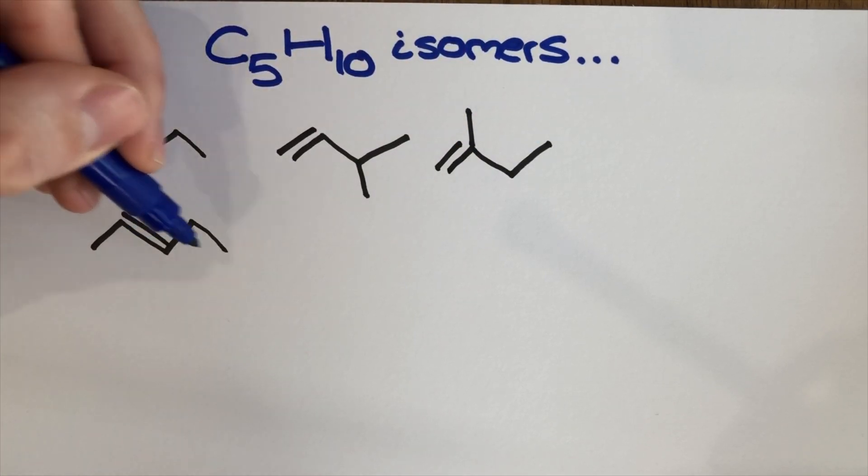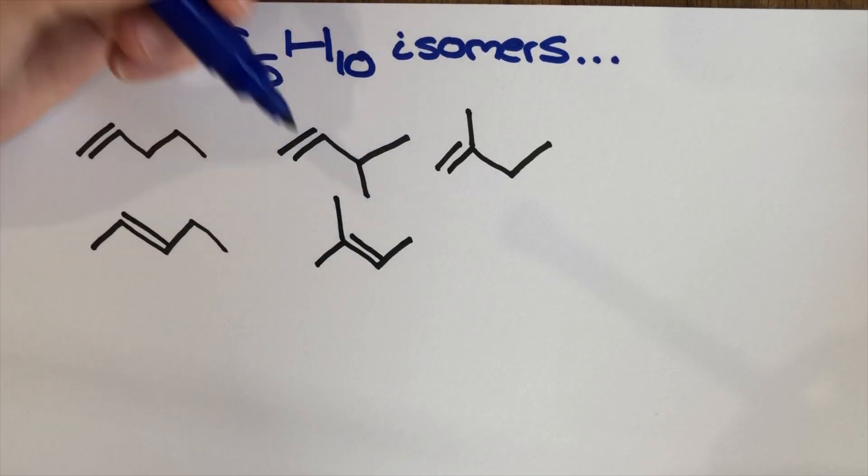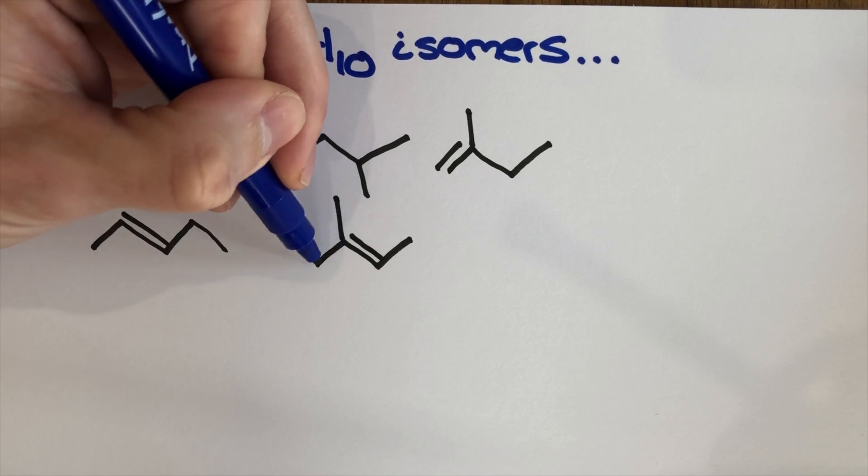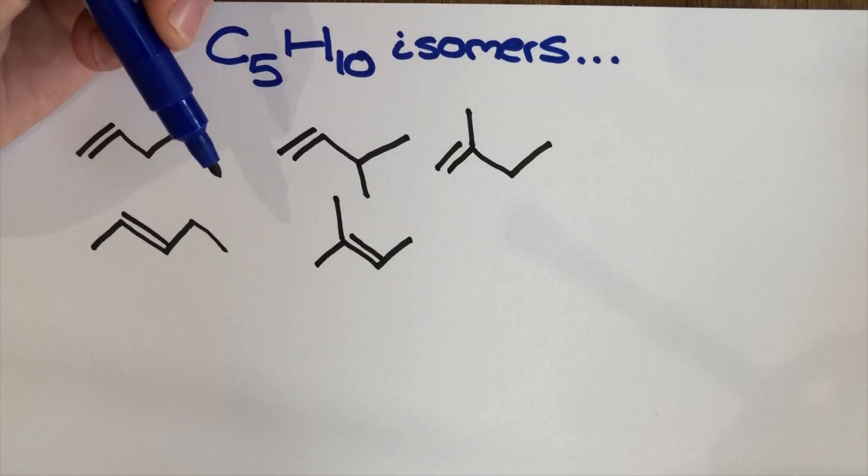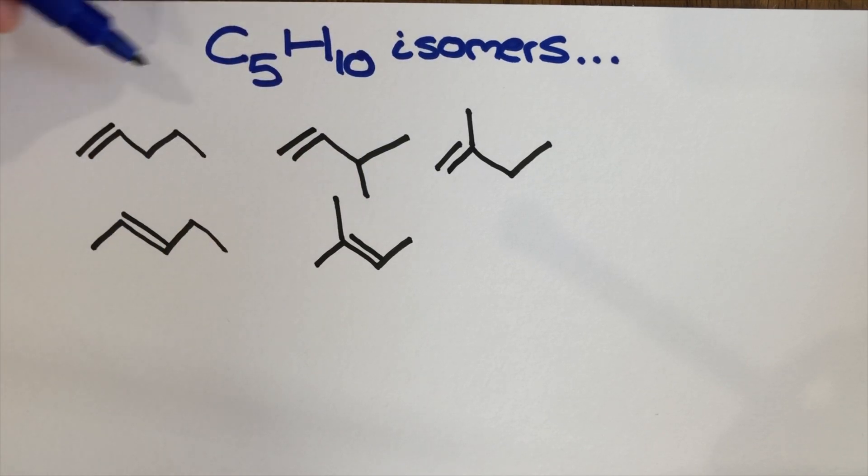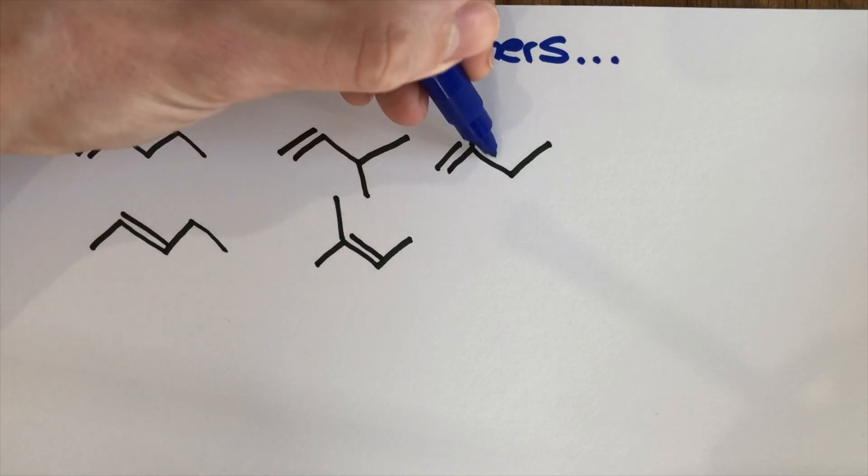This one can get branched a little bit as well but only the once and what I end up with here is 2-methylbut-2-ene. So these are my five alkene isomer options for C5H10. I've got two straight chains and three branched.